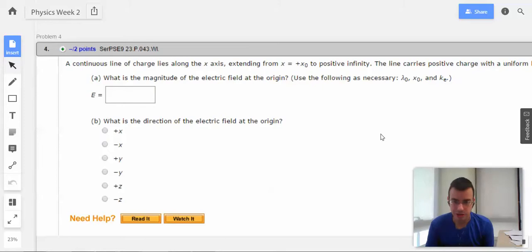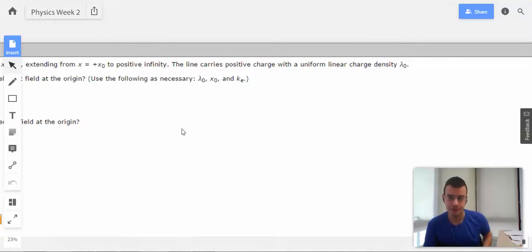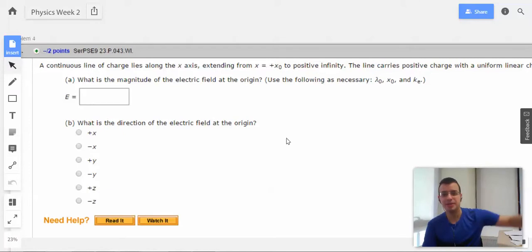A continuous line of charge lies along the x-axis extending from x equals positive x-naught to positive infinity. The line carries charge with a uniform linear charge density, lambda-naught. What is the magnitude of the electric field at the origin? Use the following as necessary.